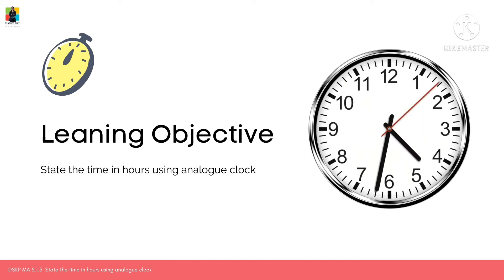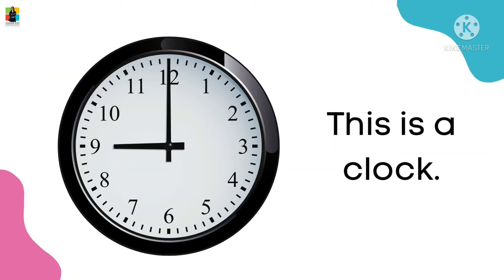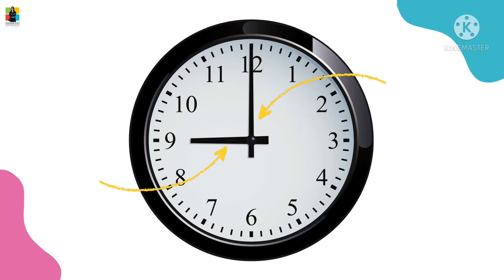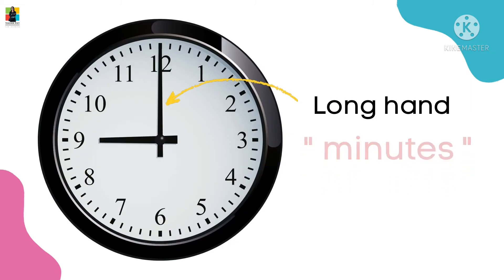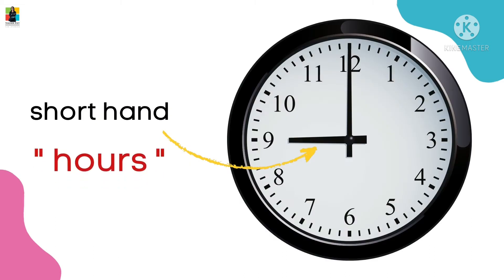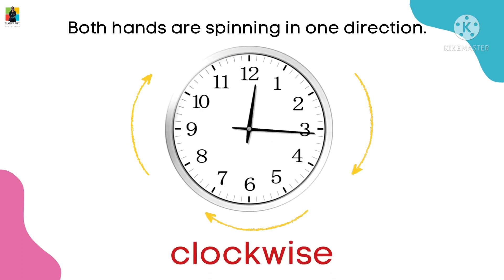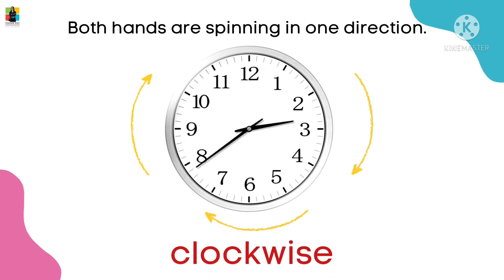Here we go. This is a clock and these are its hands. The long hand shows us the minutes, while the short hand shows us the hours. You will notice that both hands are spinning in the same direction.